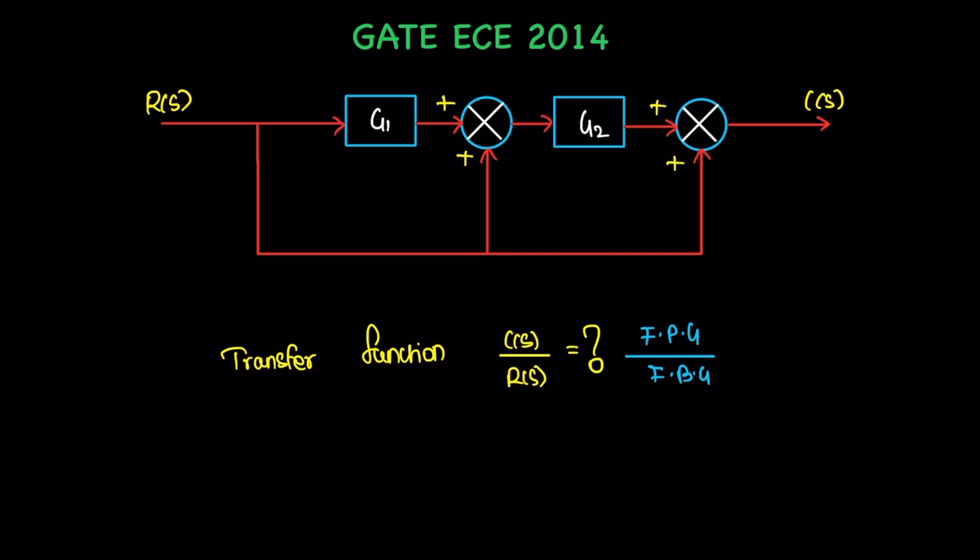For this question, there is no feedback, only forward path. The first one, the straight line. So, the path gain value is equal to product of the blocks in the path. So, path 1: g1 and g2.